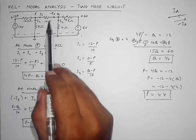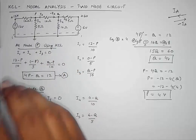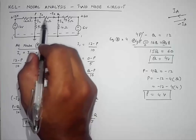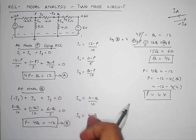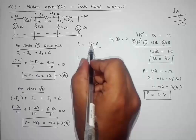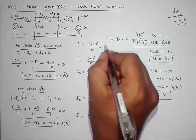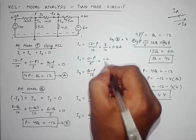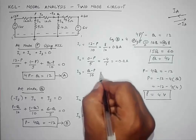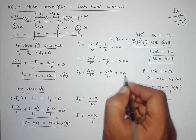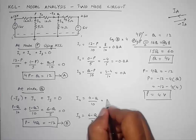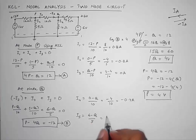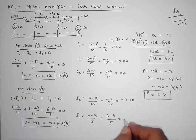We now have both node voltages: P = 4V and Q = 4V. Since both nodes have the same voltage, no current should flow in the branch between them. Computing all currents: I1 = (12 − 4)/10 = 0.8 A; I2 = (0 − 4)/5 = −0.8 A; I3 = (4 − 4)/10 = 0 A; I4 = (0 − 4)/10 = −0.4 A; I5 = (6 − 4)/5 = 0.4 A.